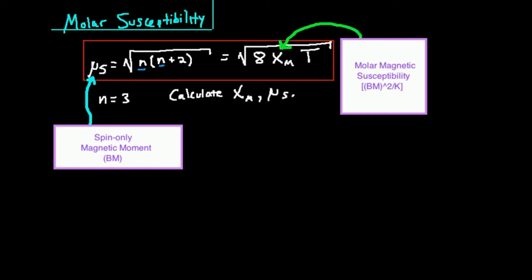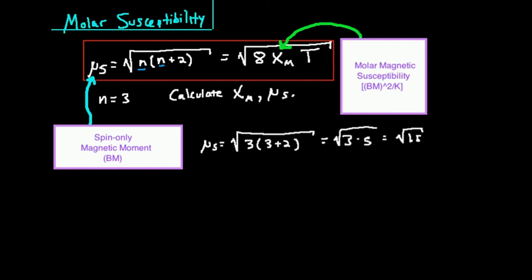The first thing we need to recognize is that in this compound there are three unpaired electrons, and since there are unpaired electrons, that gives us paramagnetism. So mu sub s is equal to the square root of 3 times the quantity 3 plus 2. Simplifying, 3 plus 2 is 5, so this becomes the square root of 15, which is approximately 3.87. So my spin-only magnetic moment is approximately 3.87 BM — Bohr magnetons. Those are the units for the spin-only magnetic moment.